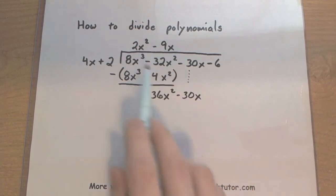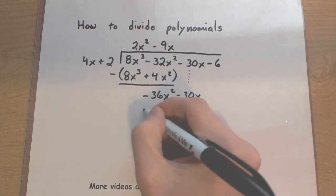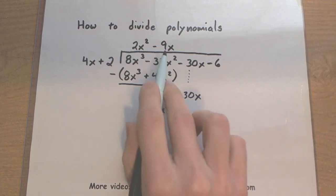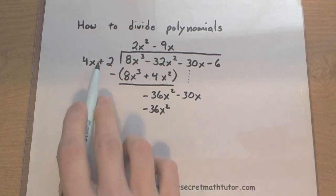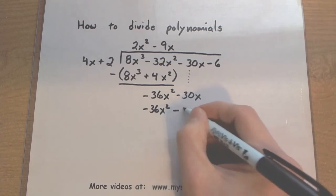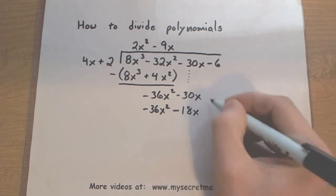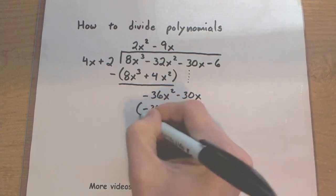So now that we have this number up top, let's go ahead and multiply through. See what we get. So negative 9x multiplied by 4x. There's that negative 36x squared. Negative 9x multiplied by a positive 2. There's a negative 18x. And of course we want to subtract that away.